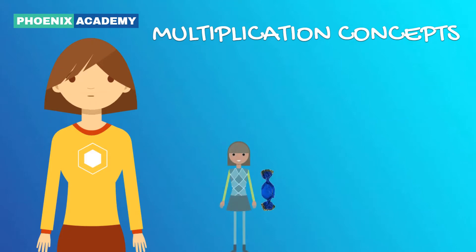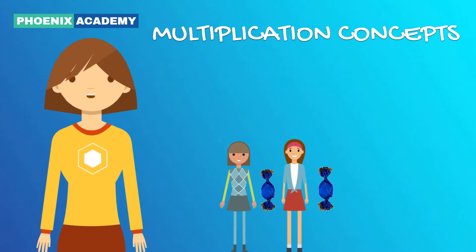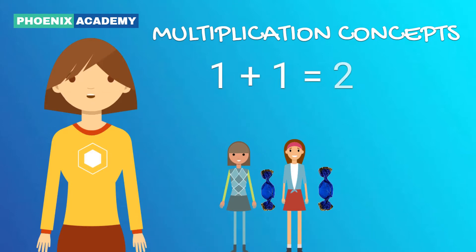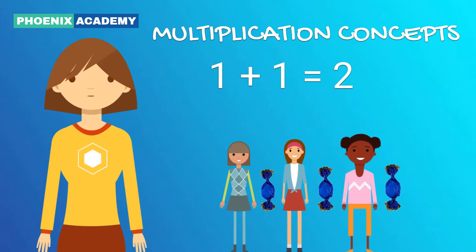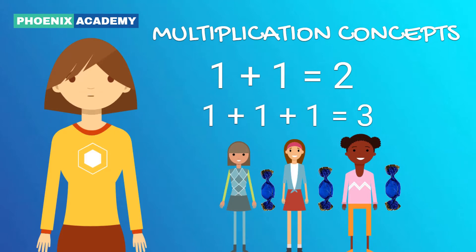Assume that you have a candy with you. Your friend also has a candy with her. So, how many candies are there in total? Yes, it is 2. How did you get 2? It is 1 plus 1. Now let's assume that another friend also has a candy with her. So, how many candies are there in total? It is 1 plus 1 plus 1. That is 3.